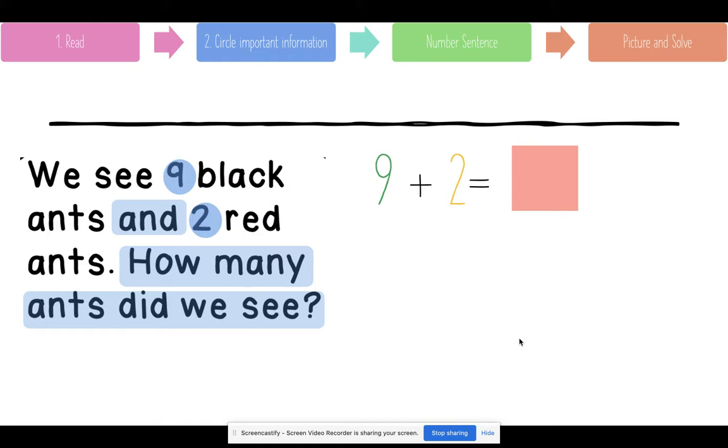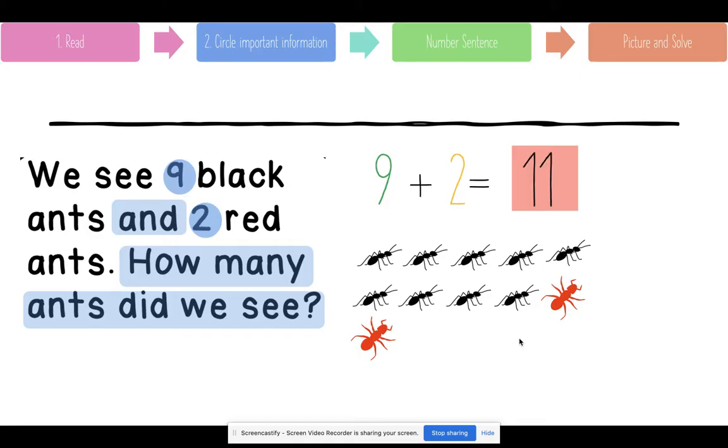I hope you said nine plus two equals blank because nine was our start plus two was our change and we are looking for the sum. Did you draw your nine black ants first? And then we're going to draw two red ants. What is the total ants that we saw? Count the ants. Did you say eleven? Good. Eleven is the total number of ants that we saw. Good job.